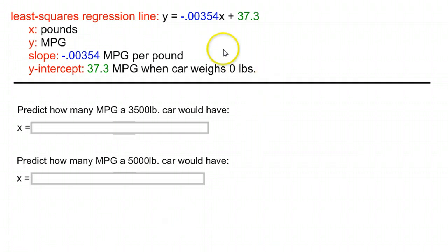In a previous example, we had the equation y equals negative 0.00354x plus 37.3, and that's referring to the weight of cars and their miles per gallon. So our slope tells us how many miles per gallon we can expect to change per pound. The y-intercept is when we have a zero pound car, what we can expect to get for gas mileage.